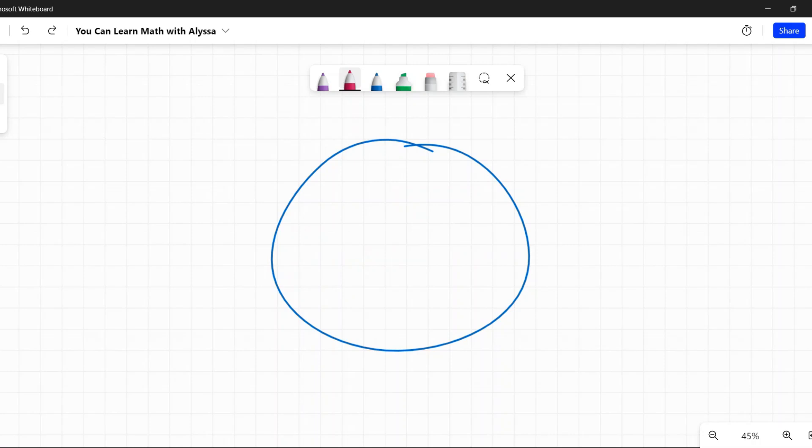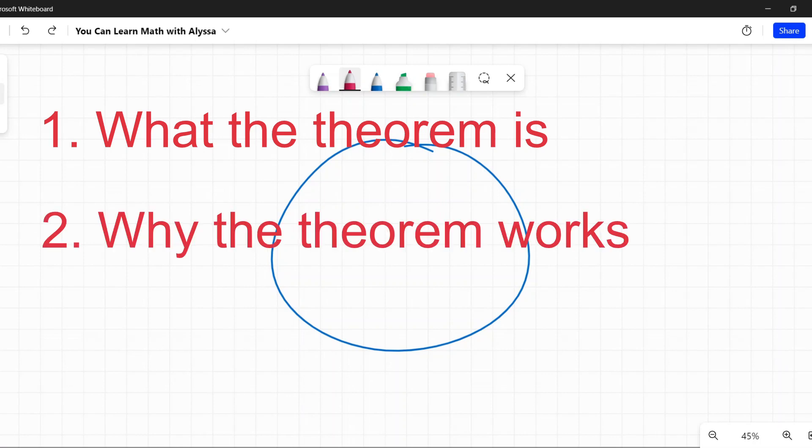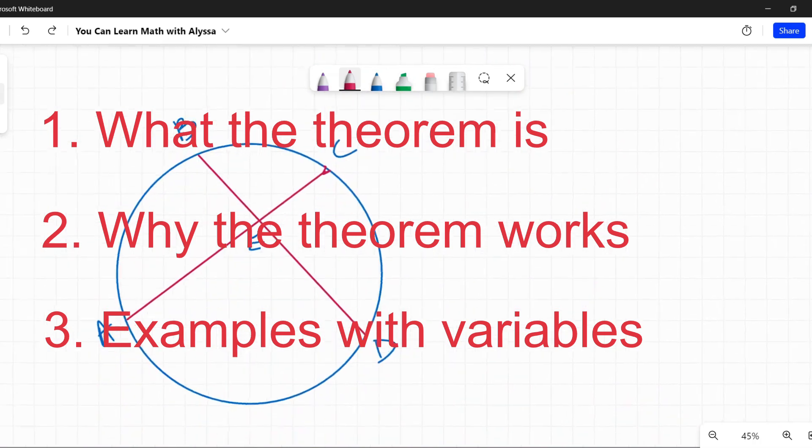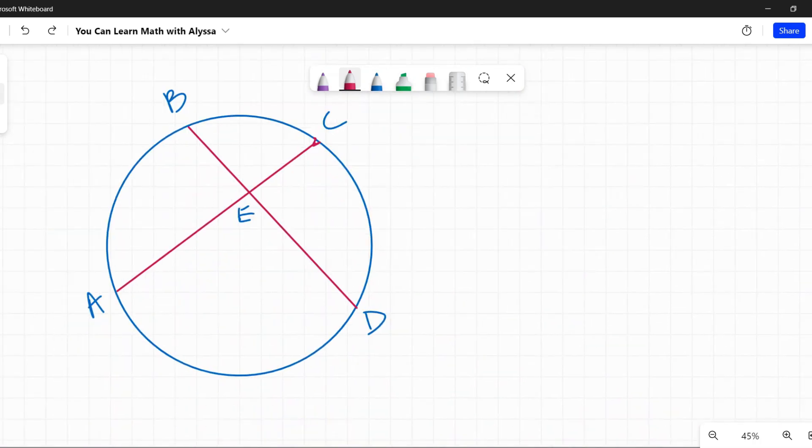So intersecting chords, intersecting means crossing, so this is about chords that intersect or cross. I'm going to explain to you what the theorem is, why it works, and then show you some examples using variables because they are going to throw those at you, I promise.